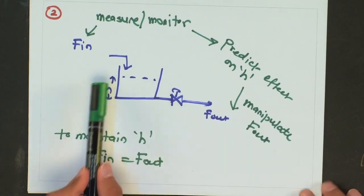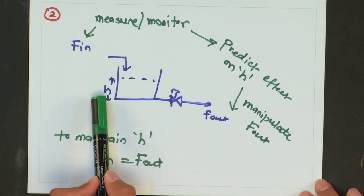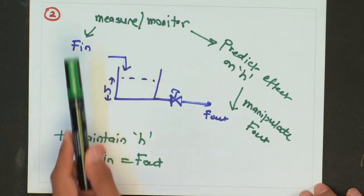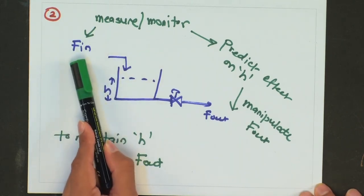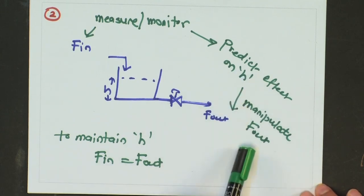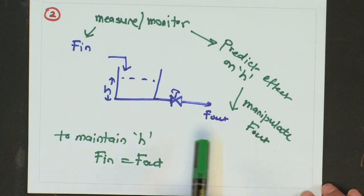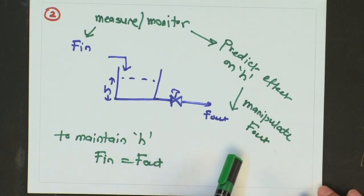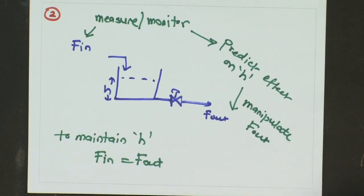In that case there is no need to measure the height inside the tank. All you are doing is measuring the disturbance variable, predicting its effect on the control variable, and based on that you take a control action such that the effect of that disturbance gets nullified. This type of control system, where you predict the effect of the disturbance and try to take action before the system reacts to that disturbance, is known as a feed forward control strategy.